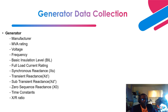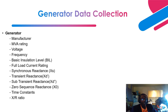For the generator, you need the manufacturer, MVA rating, voltage, frequency, basic insulation level, and full load current rating. For the reactances, you need the synchronous, transient, and sub-transient reactances, plus the zero-sequence reactance. You also need the time constants — synchronous, transient, and sub-transient — which you'll also need for transient stability studies. It is best to collect all this data when you are in the field. You also need the X/R ratio.